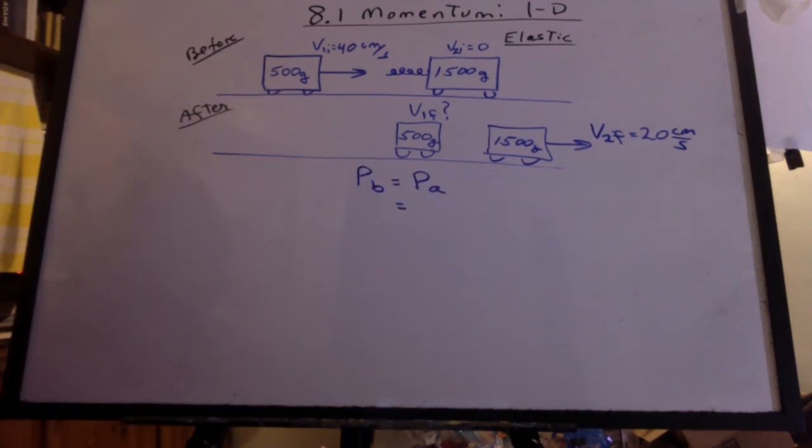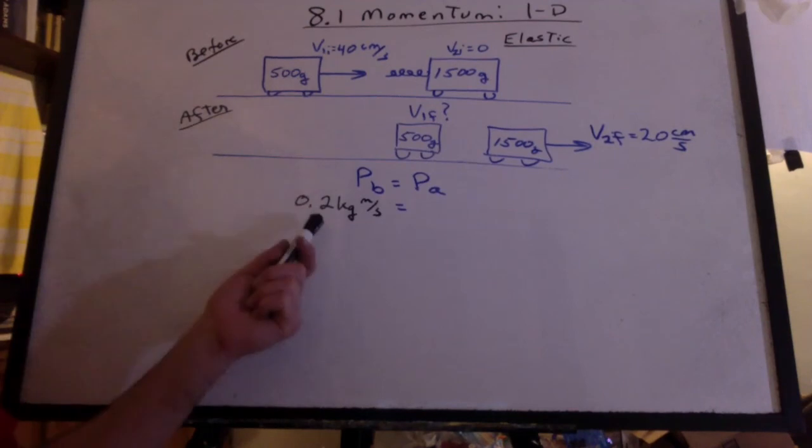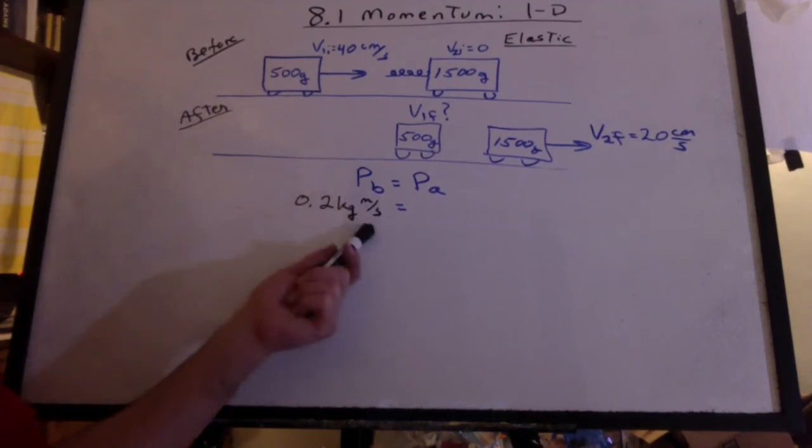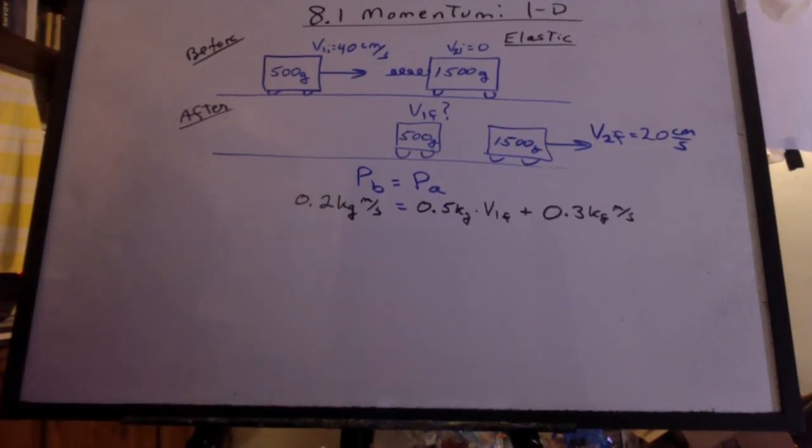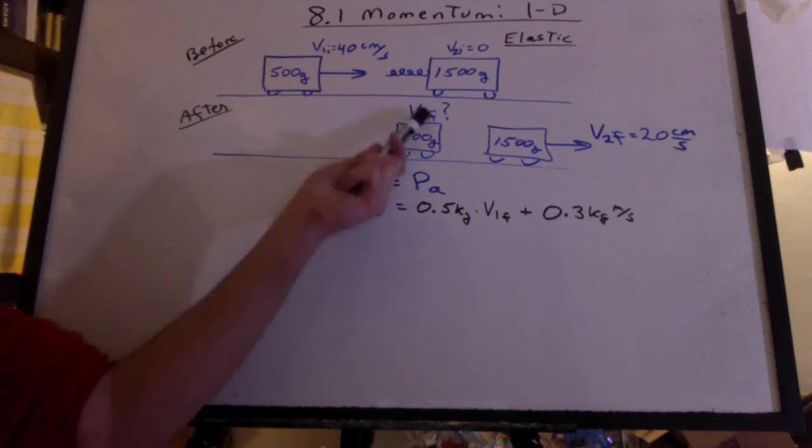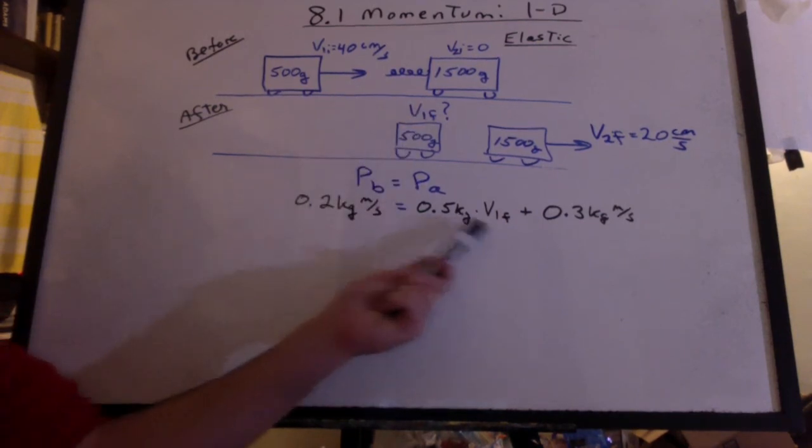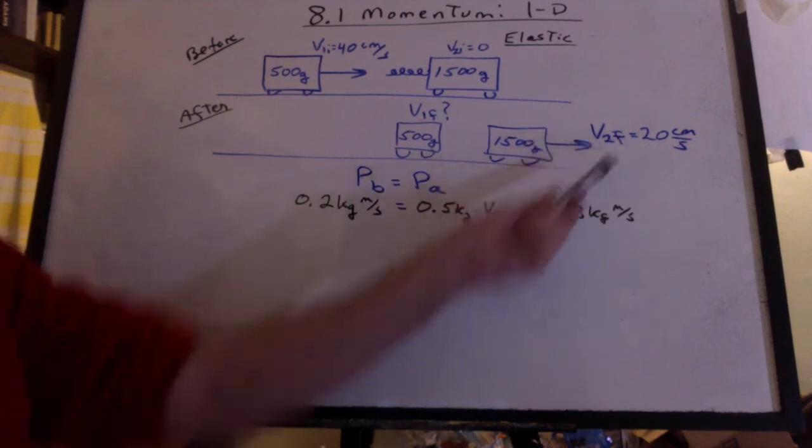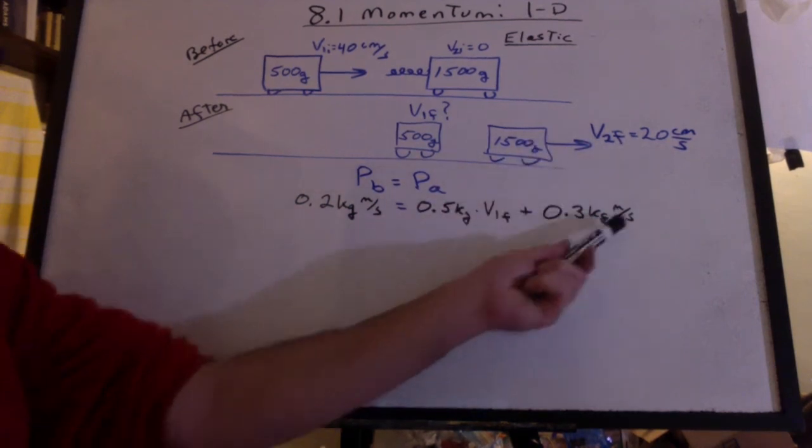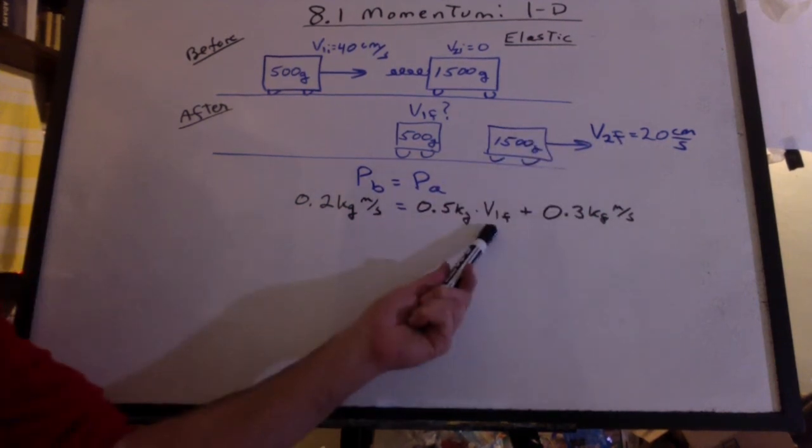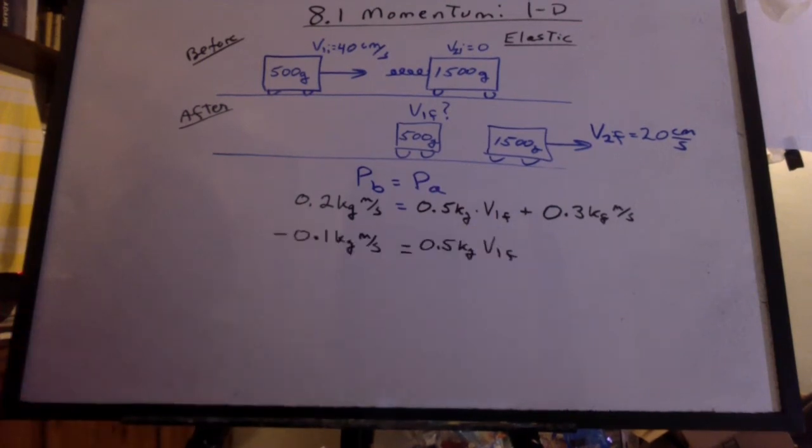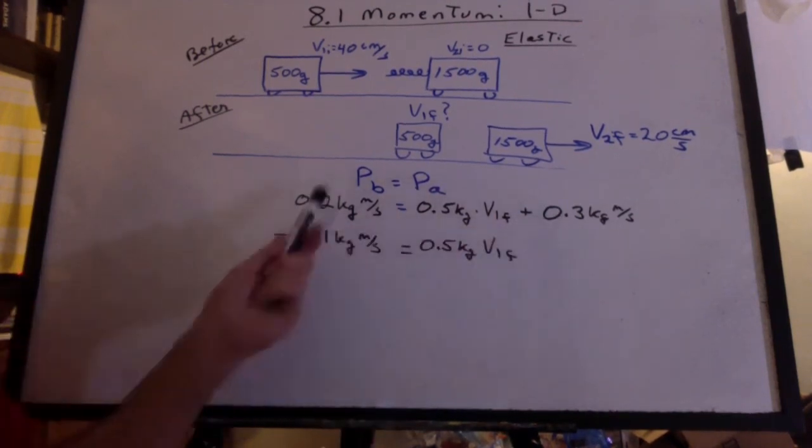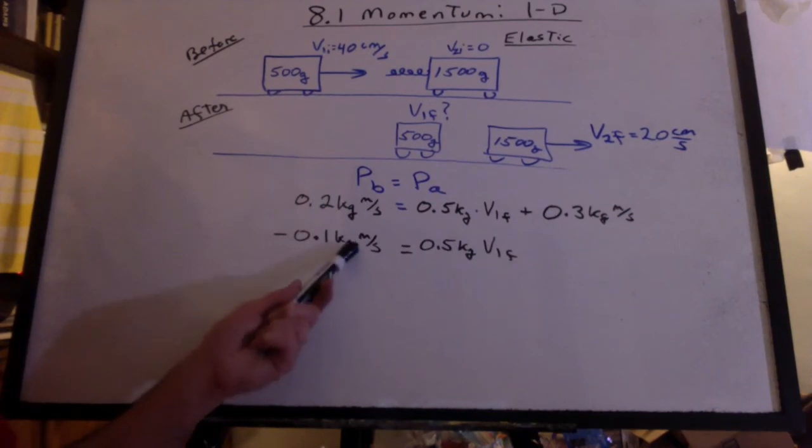Conservation of momentum. You do the math. Do you get 0.2 kilogram meters per second? Well, that one, we don't know what it's doing, so we just write 0.5 kilograms times V1 final. And if you do the math, you should get 0.3 kilogram meters per second. And now we have to solve for V1 final. Hey, this is interesting. When you bring this over, you get negative 0.1 kilogram meters per second.